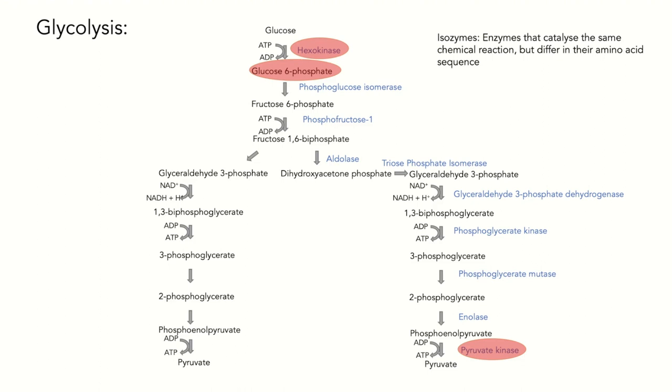For pyruvate kinase in cancer cells, its embryonic isozyme is expressed. With a lower catalytic rate than the original pyruvate kinase, the enzyme creates a bottleneck for glycolysis, allowing the accumulation of glycolytic intermediates, probably for biosynthesis purposes.